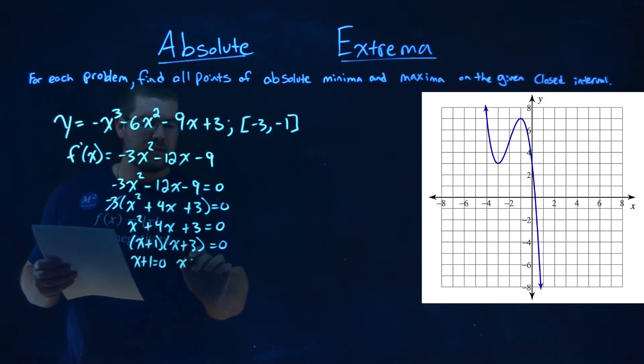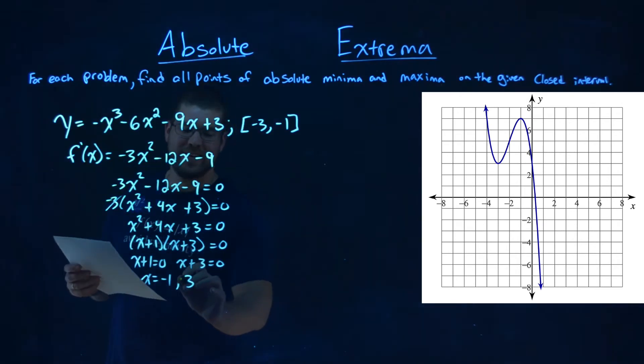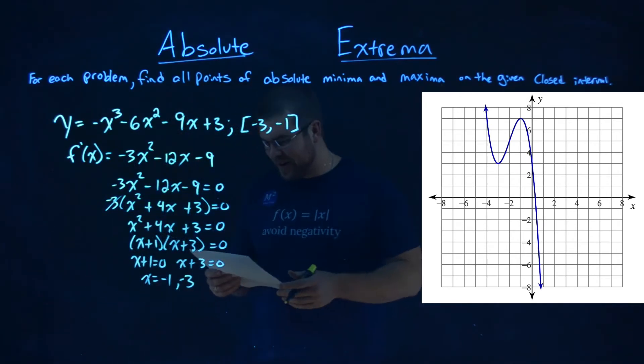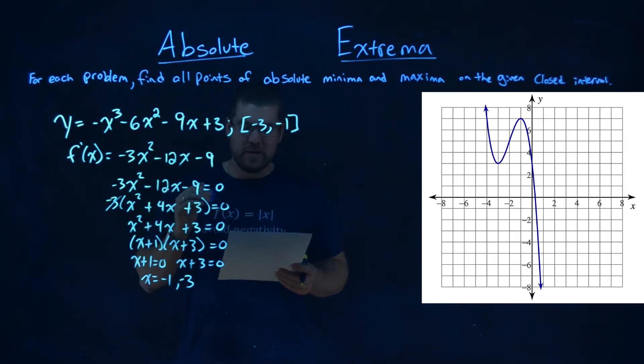Now, we can set each part equal to 0. So x plus 1 equals 0, and x plus 3 equals 0, and solve. And x is negative 1 and negative 3. Almost messed that one up right there.